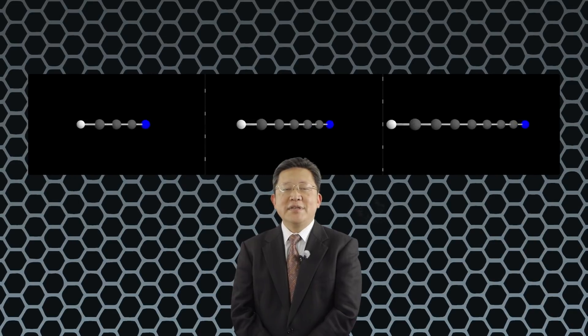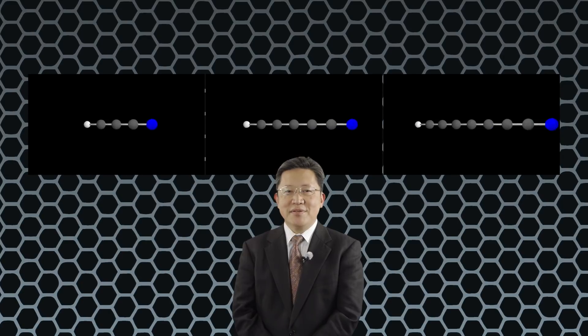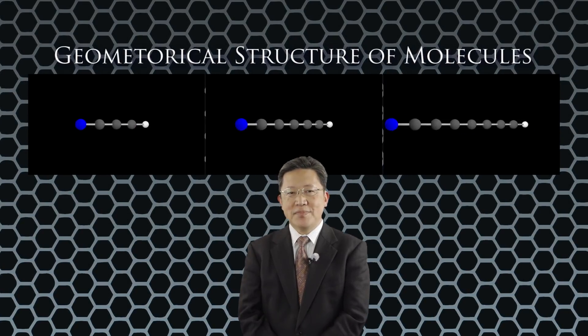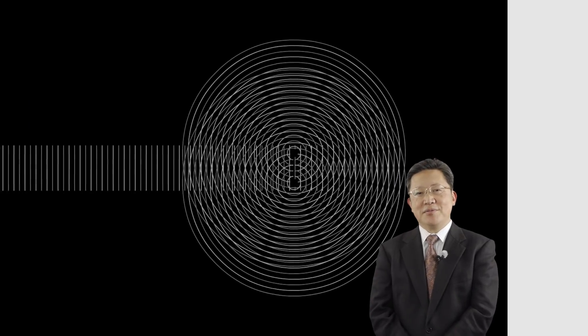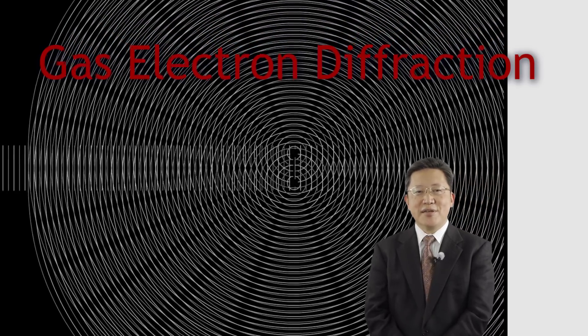From the analysis of microwave spectra, we can determine the geometrical structure of molecules. But there is another method to determine geometrical structure of molecules: gas electron diffraction.